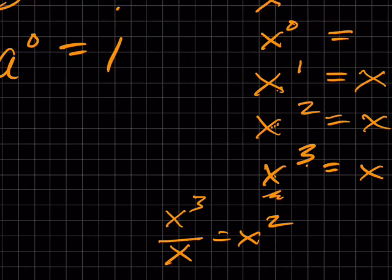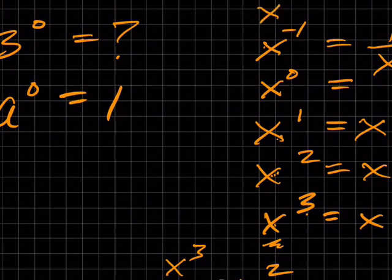If I have x to the negative one, hopefully you guys know that that's one over x. Running out of room here. X to the negative two is one over x squared. Notice there's one less x in the denominator each time. Take this guy and divide it by x, get this. Take this divided by x, get this.